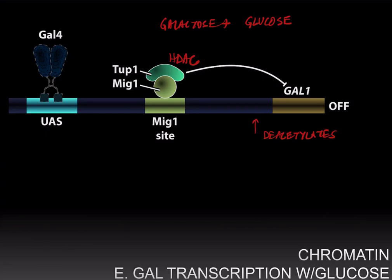When glucose is available, deacetylation of the chromatin at the GAL1 promoter means that nucleosomes associate tightly with the GAL1 promoter DNA and thereby prevent transcription or recruitment of RNA polymerase. Whereas when glucose is not available, MIG1 is not recruited, so there is no HDAC to deacetylate the promoter chromatin, and RNA polymerase is recruited by the GAL4 activation domain for high levels of transcription.